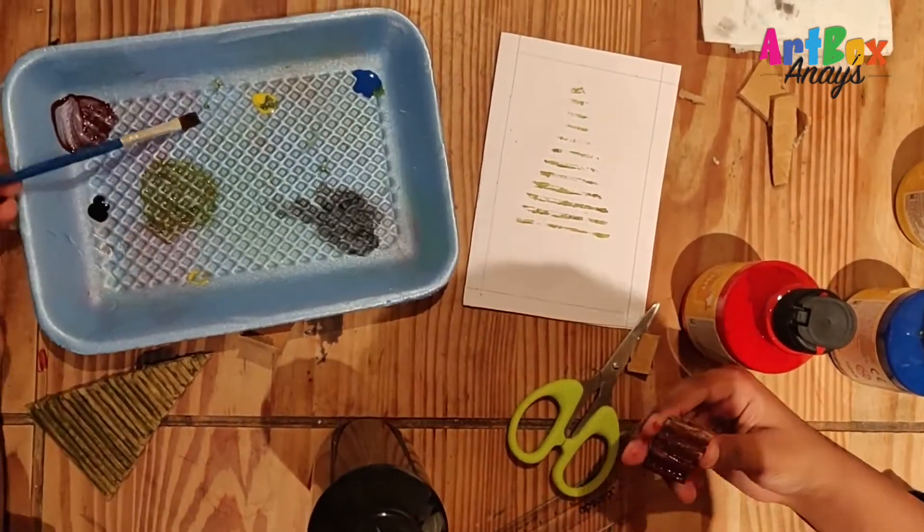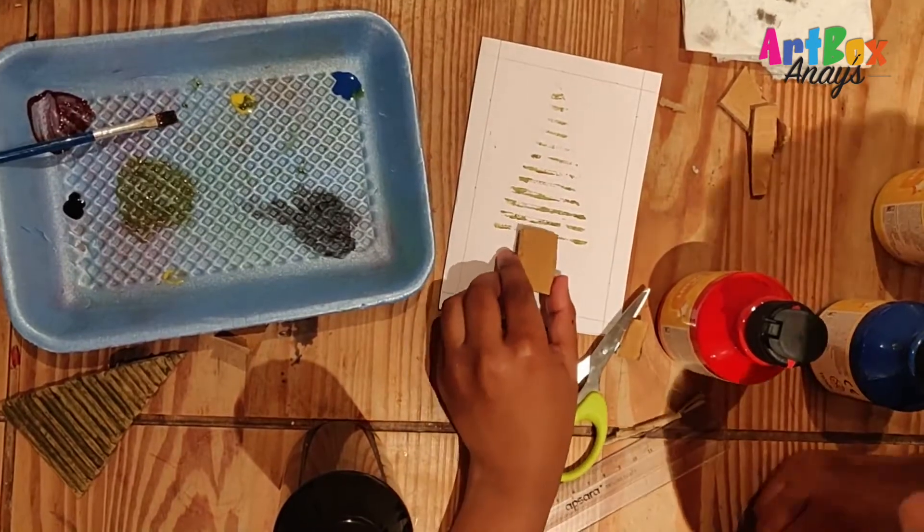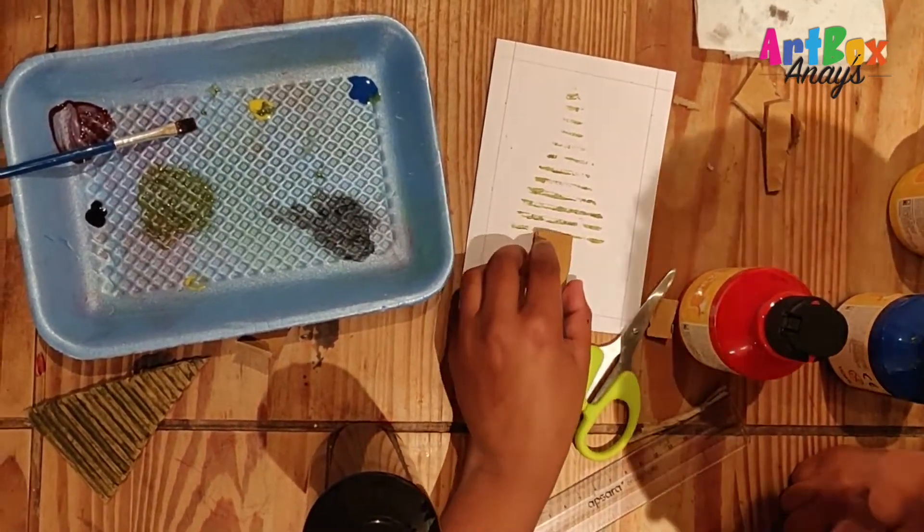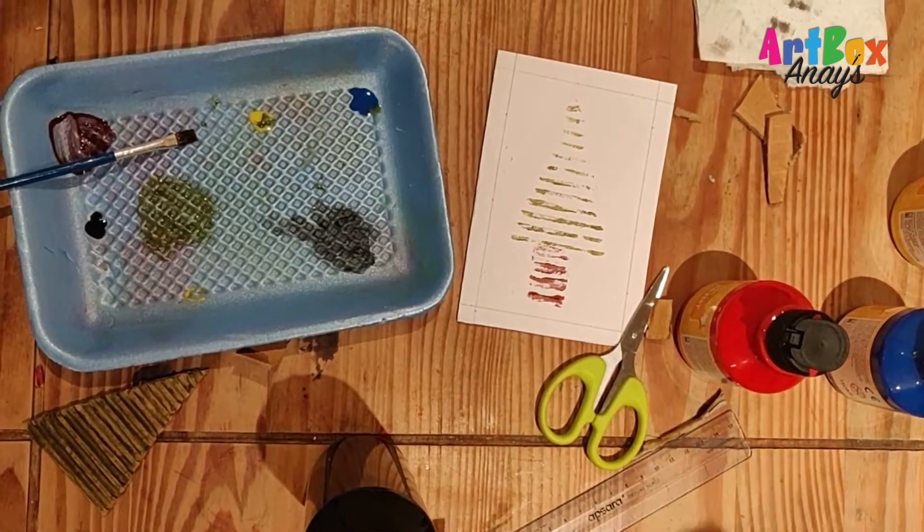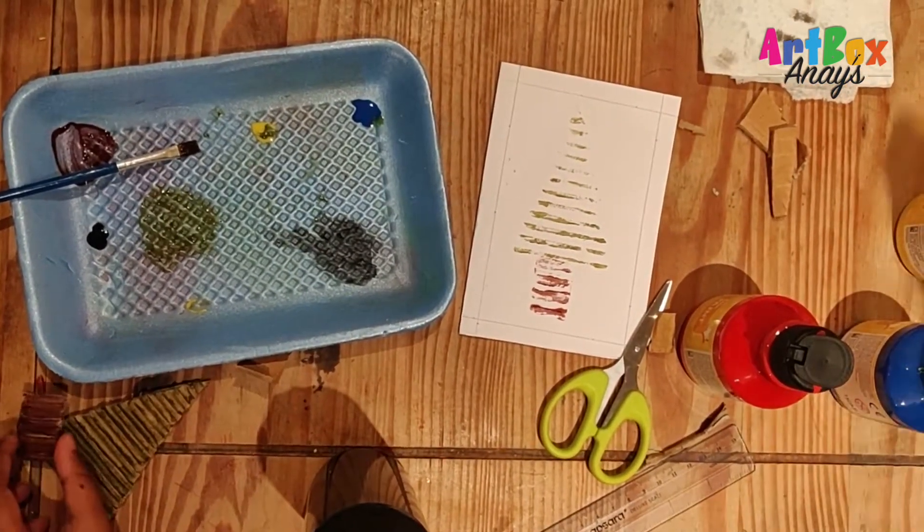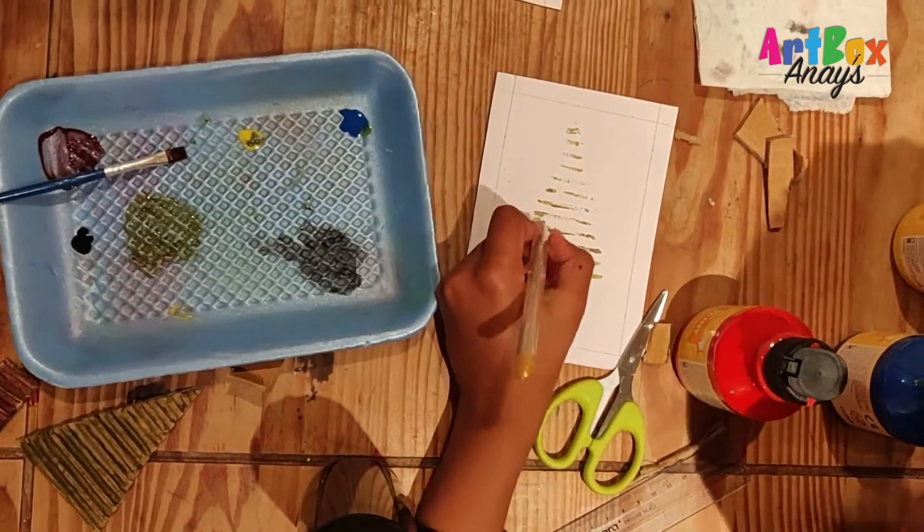And now the last part is we're going to stamp it down here. See this guys, it's looking beautiful. And now we're going to take our golden color and let's make some bubbles.